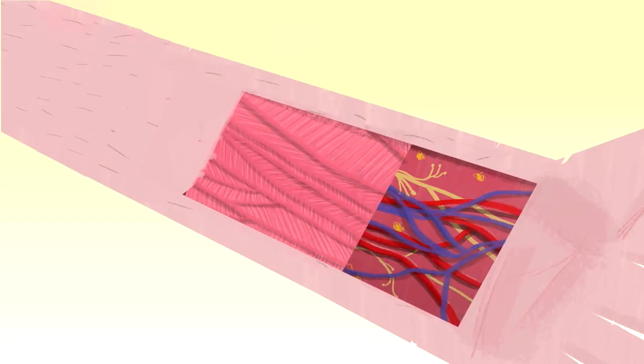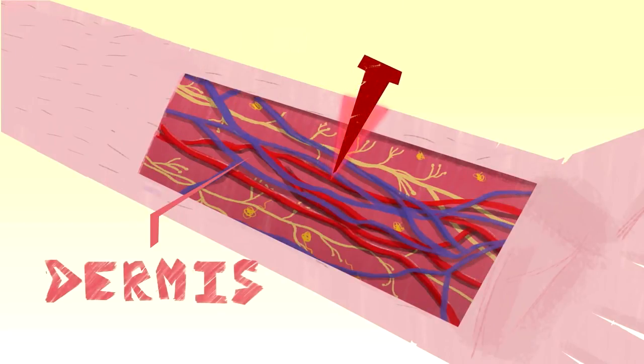But sometimes a wound penetrates into the dermis, which contains blood vessels and the various glands and nerve endings that enable the skin's many functions. And when that happens, it triggers the four overlapping stages of the regenerative process.